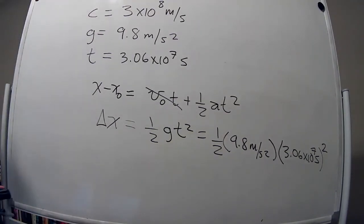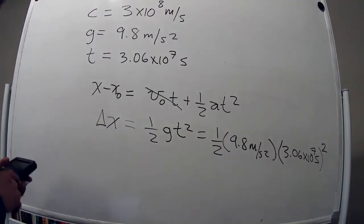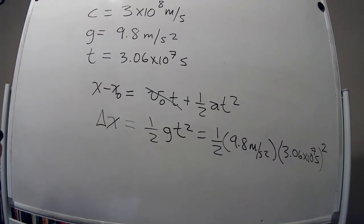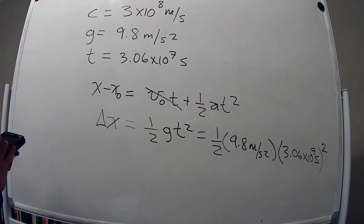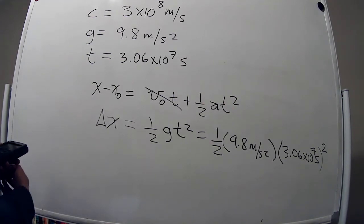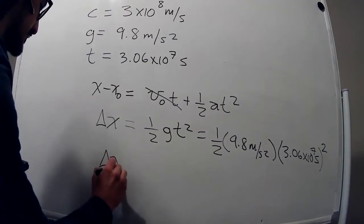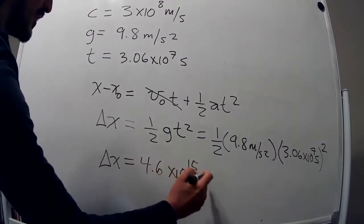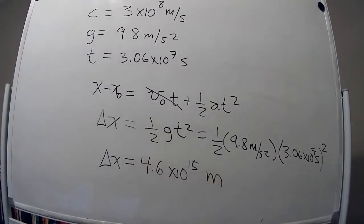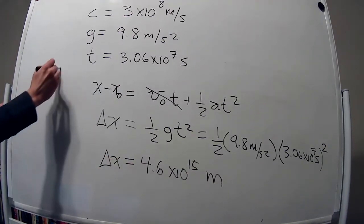Bringing out the calculator — (3.06×10⁷)² × 9.8 ÷ 2 — the displacement is 4.6×10¹⁵ meters. That's the answer to part B.